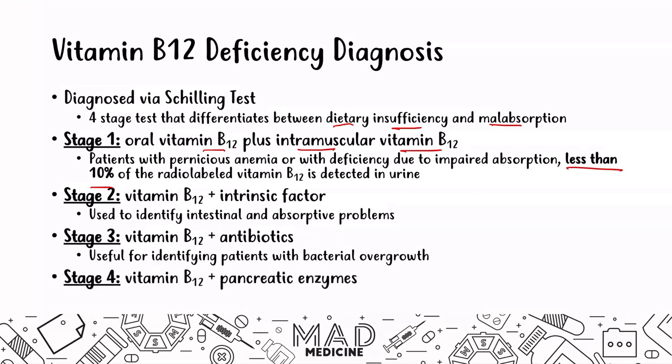Stage four is where vitamin B12 is given with pancreatic enzymes, which is useful for identifying patients with pancreatic insufficiencies. In summary: stage one with oral plus intramuscular B12 and less than 10% in urine suggests pernicious anemia; stage two with intrinsic factor rules out a stomach absorption problem; stage three with antibiotics evaluates bacterial overgrowth versus intestinal absorption issues; and stage four with pancreatic enzymes identifies pancreatic insufficiency blocking vitamin B12 absorption.